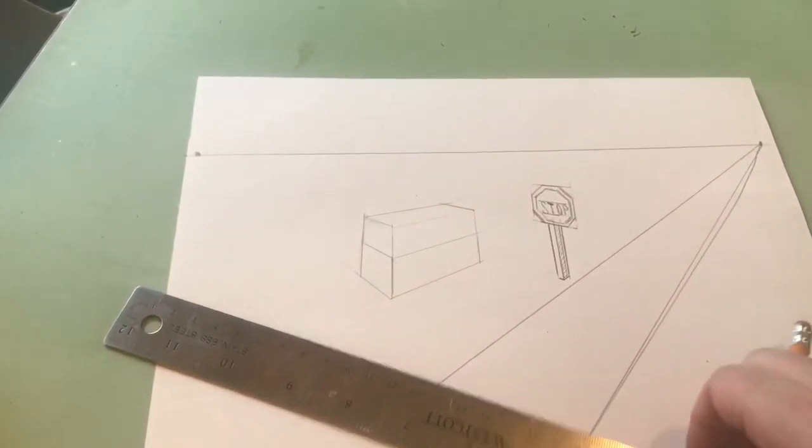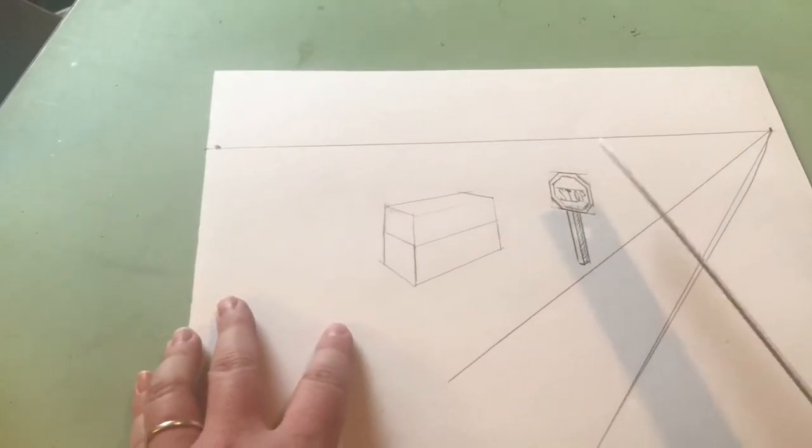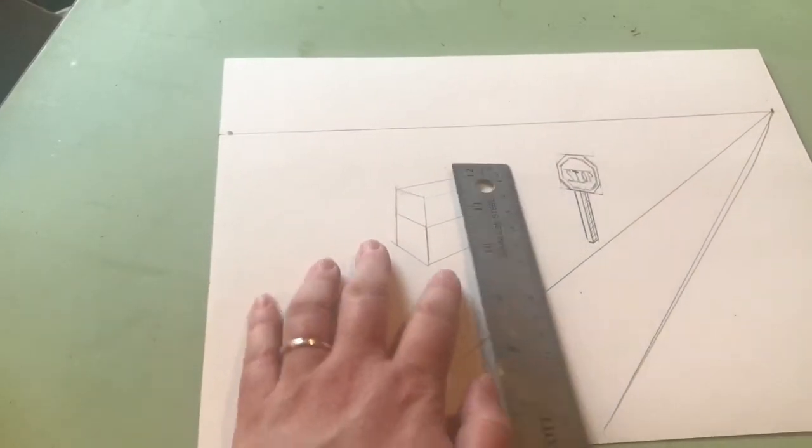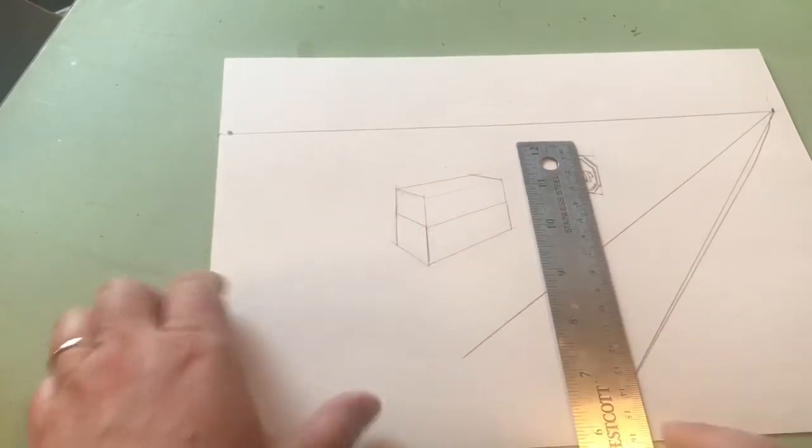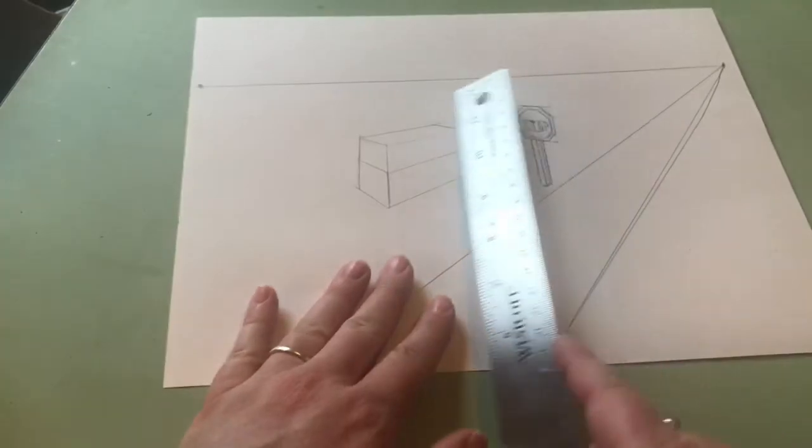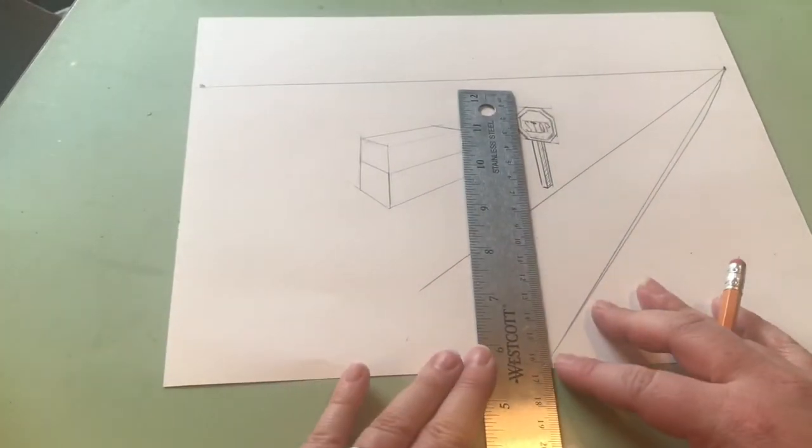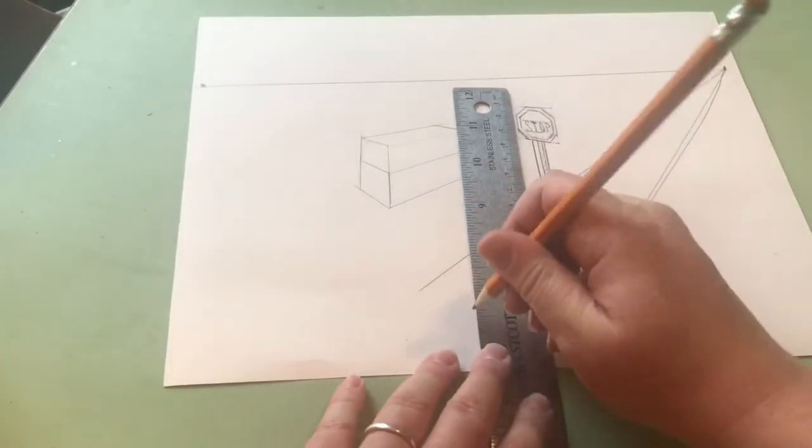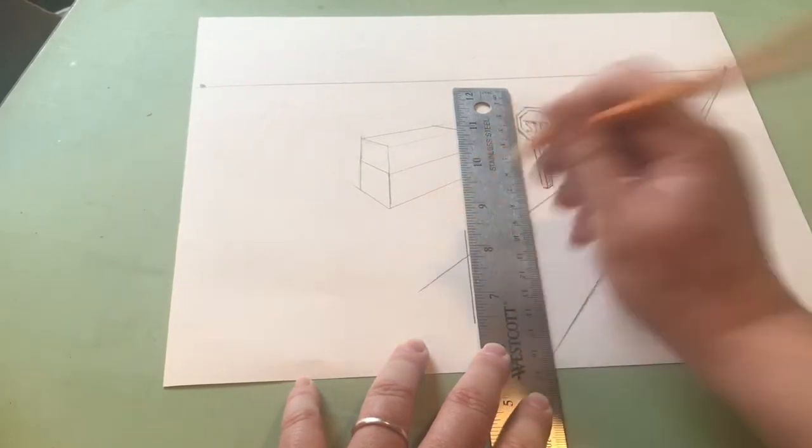If I wanted to do a street sign that maybe has more than one thing, like the crisscrossing like you would have on the corner of a residential street, I'll do that down a little lower just so I have more space and put it right in the middle of the road just for fun. So I have a vertical.